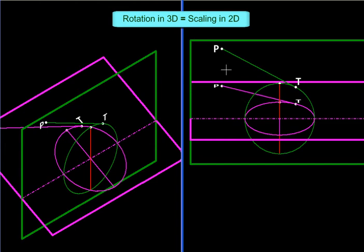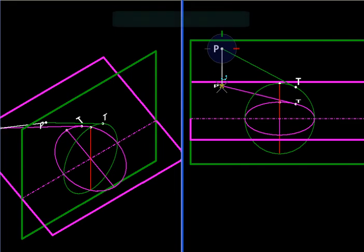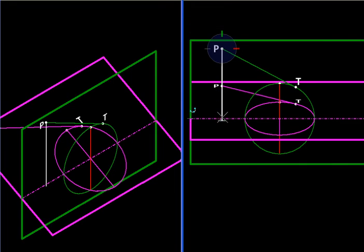And you will see that for every point in the green world just gets its y coordinate scaled down. For this point P this is happening. For this point of tangency T it is happening. For every point it will happen.